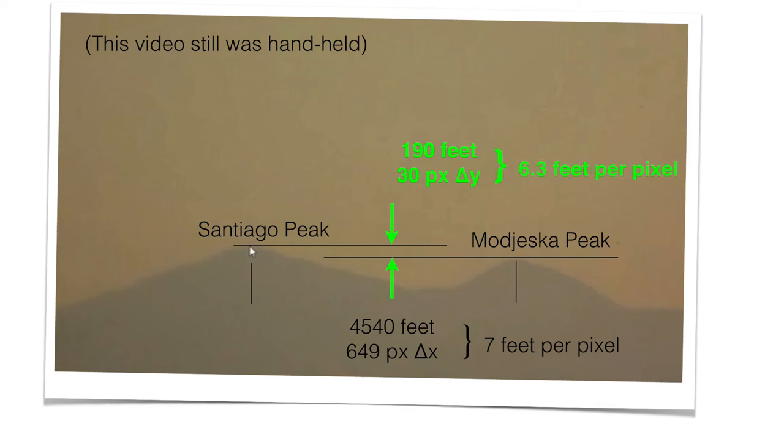Now the Delta Y, represented by green, 30 pixels for 190 feet, that's about 6.3 feet per pixel. Now, please notice these two values are not the same, but you might take an average, 6.5, 6.6 or something like that. But also remember that this was from a handheld, this was a still from a handheld camera. So take this with a little bit of a grain of salt.